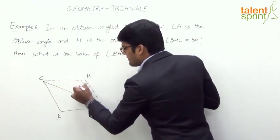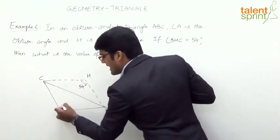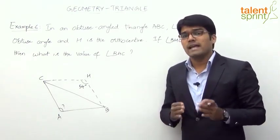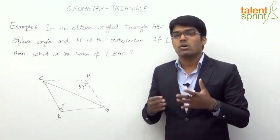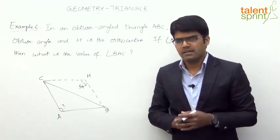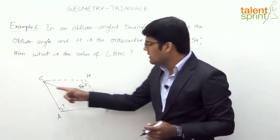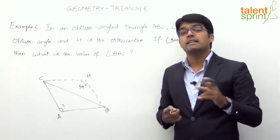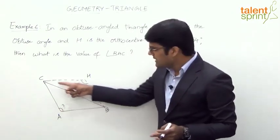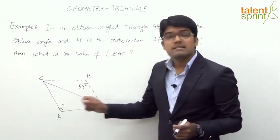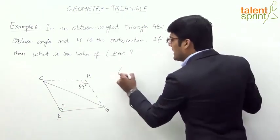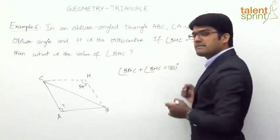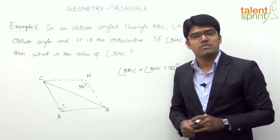This angle BHC is 54 degrees, and we need to find angle BAC. From the concept of orthocenter, the angle made by any side with the orthocenter and the vertical angle are supplementary. The side here is BC; the angle it makes with the orthocenter is 54 degrees, and the vertical angle is angle A. So angle BAC plus angle BHC equals 180 degrees.